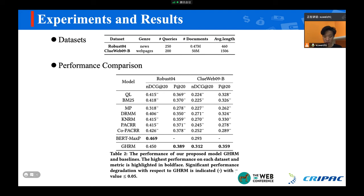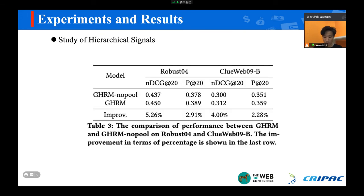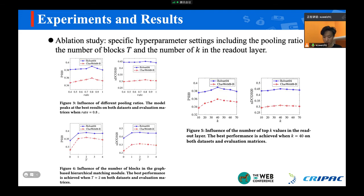To demonstrate the effectiveness of our proposed hierarchical signal modeling unit, we conduct an ablation study and the results show that GHRM is superior to its variants without hierarchical signal modeling units on all datasets and metrics. We also analyze the sensitivity of GHRM to hyperparameters and results are shown on screen.